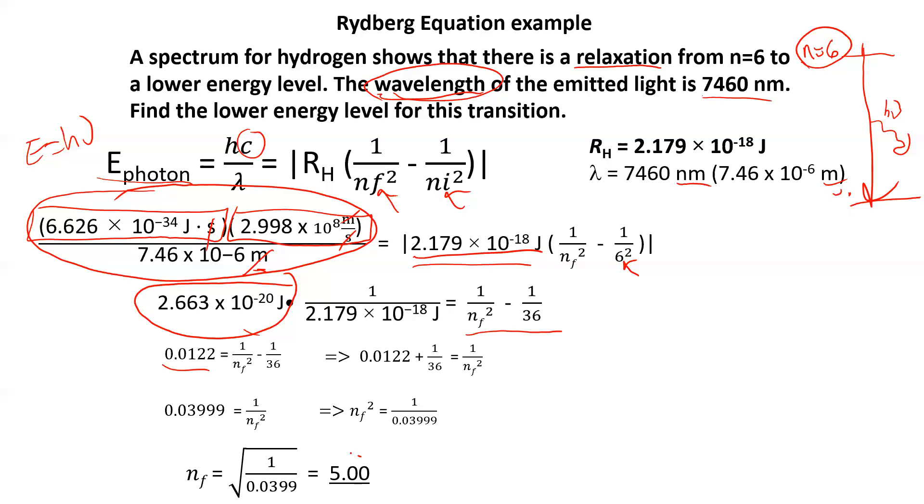If this is not close to an integer, then your math somewhere is wrong. It has to be, because remember, your principal quantum numbers, they can be 1, 2, 3, 4. So it has to be an integer. So what does this mean? It means that based on the wavelength of light that was emitted, the transition was from the sixth energy level down to the fifth.